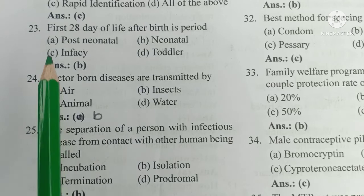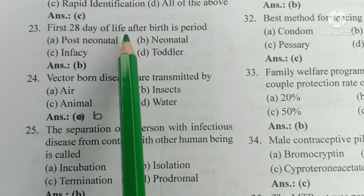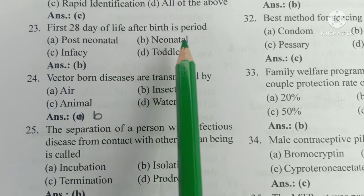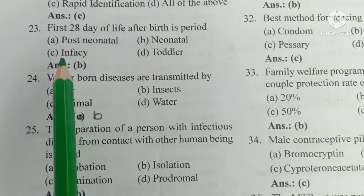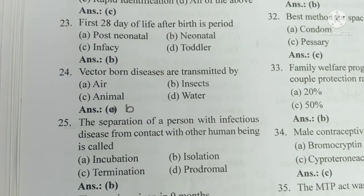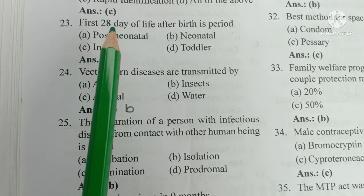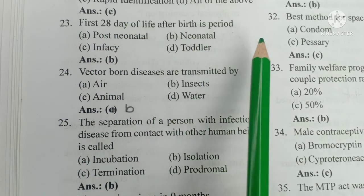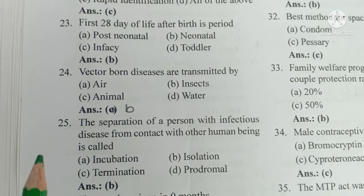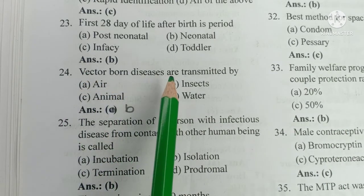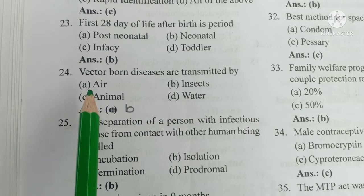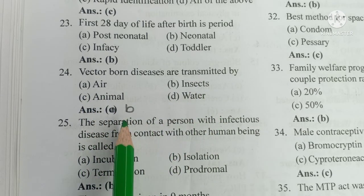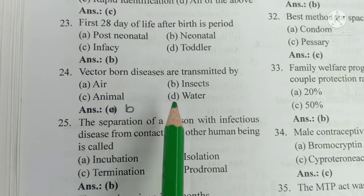Question 23. The first 28 days of life after birth is the: A) post-neonatal, B) neonatal, C) infancy, D) toddler period. The answer is B — the first 28 days of life after birth is the neonatal period. Number 24. Vector-borne diseases are transmitted by: A) air, B) insects, C) animal, D) water. The answer is B, insects. Vector-borne diseases are transmitted by insects.